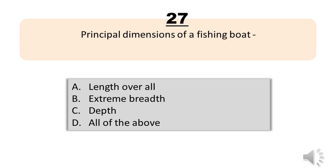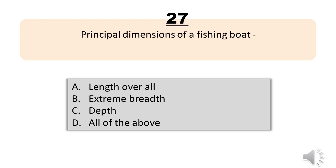Number 27. Principal dimensions of a fishing boat. A. Length overall. B. Extreme breadth. C. Depth. D. All of the above. The correct answer is Letter D. All of the above.